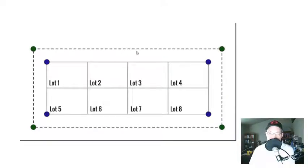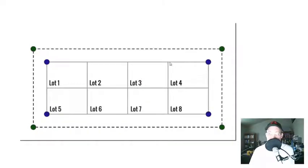This subdivision map is the original map because it created the lots — so it's the original controlling survey. These eight monuments set on this map are original controlling monuments, and these interior lot corners are original corners even though they don't have a monument to mark them.